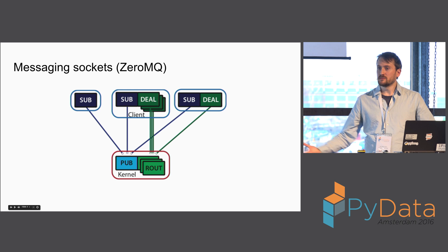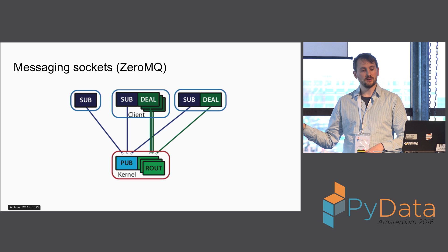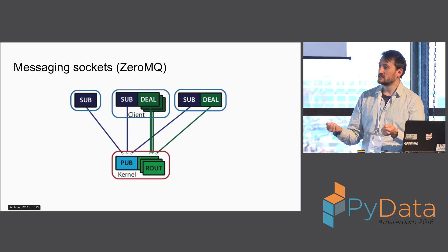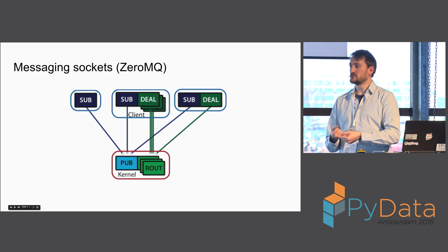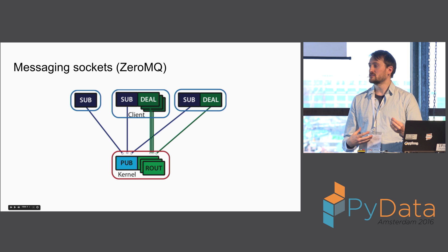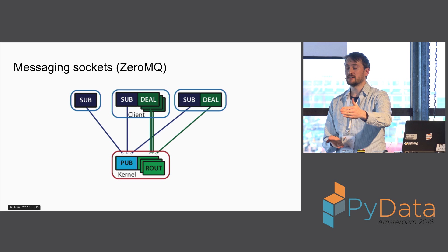About the protocol: we use a bunch of sockets from a networking library called 0MQ, where the kernel — which is what we call the process where code runs — has a collection of sockets that listen for particular kinds of messages. You can connect clients to those sockets, including a full client like we use in the notebook that connects to all the different sockets for gathering output, requesting execution, and responding to raw input requests. Or you can connect services that provide only a subset of that functionality, for example a service that just logs all the outputs produced or all the code someone asked to run.